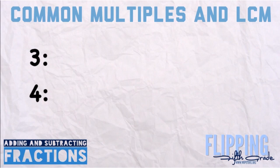We're going to talk about common multiples and the LCM, which stands for least common multiple. Later on we'll relate it back to fractions and explain what we use it for. We have two numbers here: 3 and 4. We're going to write out the multiples of these two numbers — think of it as counting by 3's and counting by 4's.